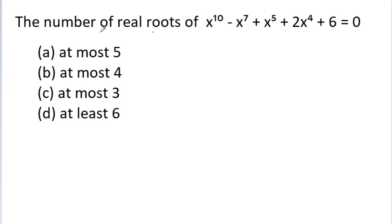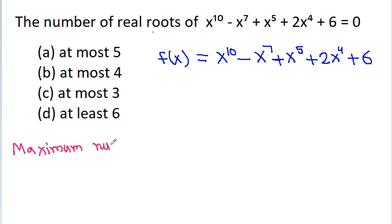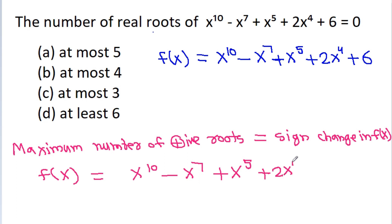In this video we have to find the number of real roots of x¹⁰ - x⁷ - x⁵ - 2x⁴ - 6 = 0. If we take f(x) = x¹⁰ - x⁷ - x⁵ - 2x⁴ - 6, then the maximum number of positive roots is equal to the number of sign changes in f(x).